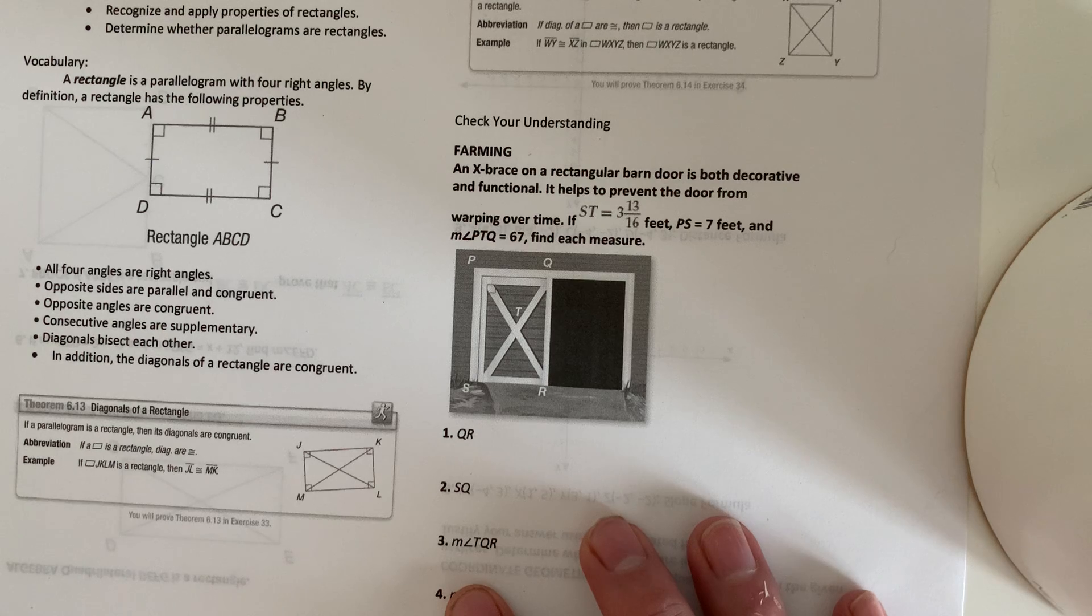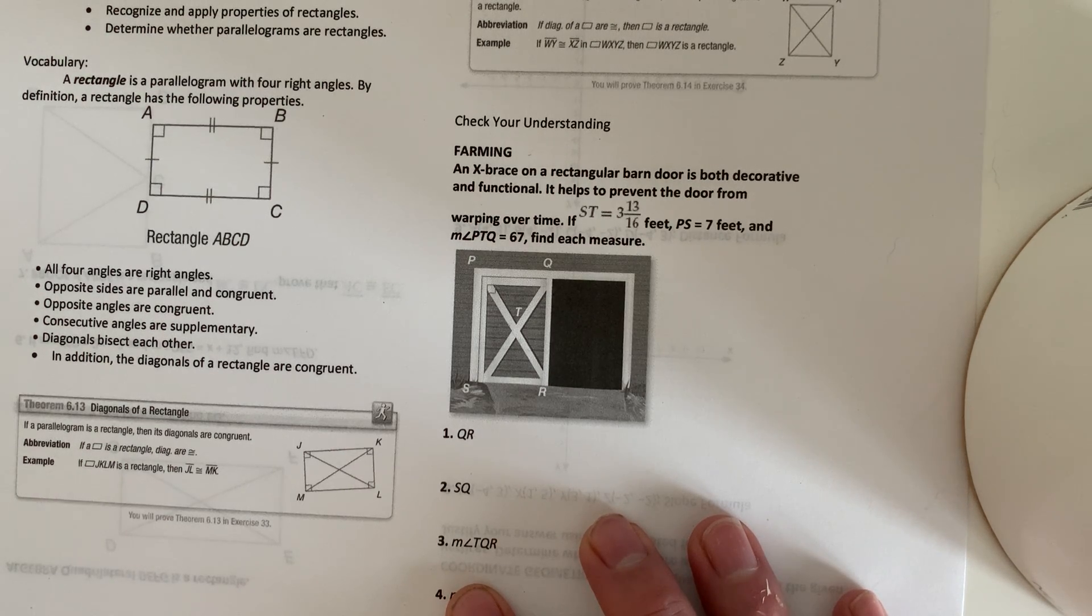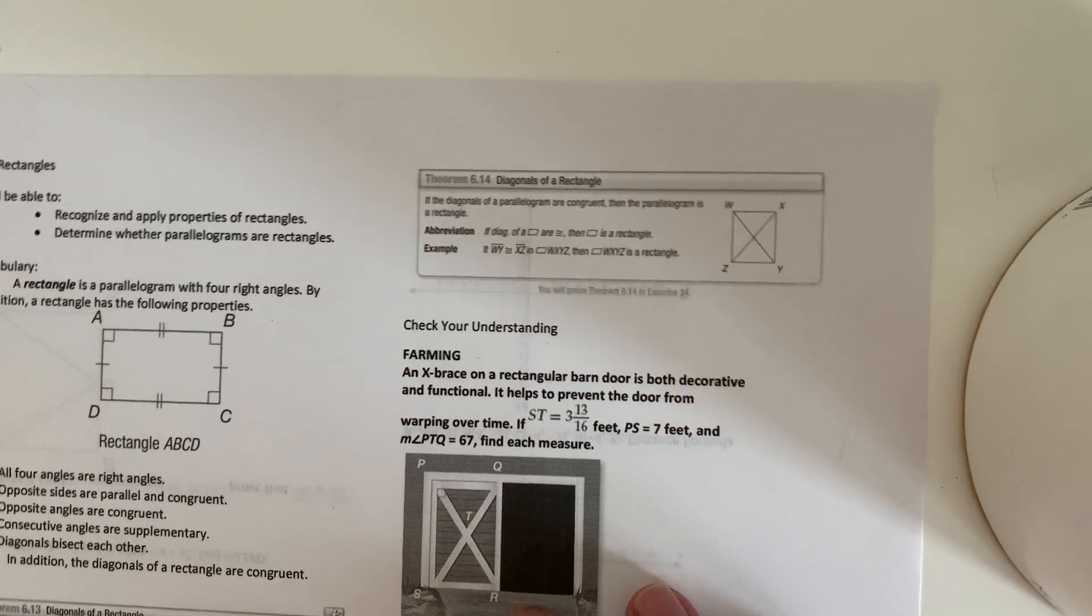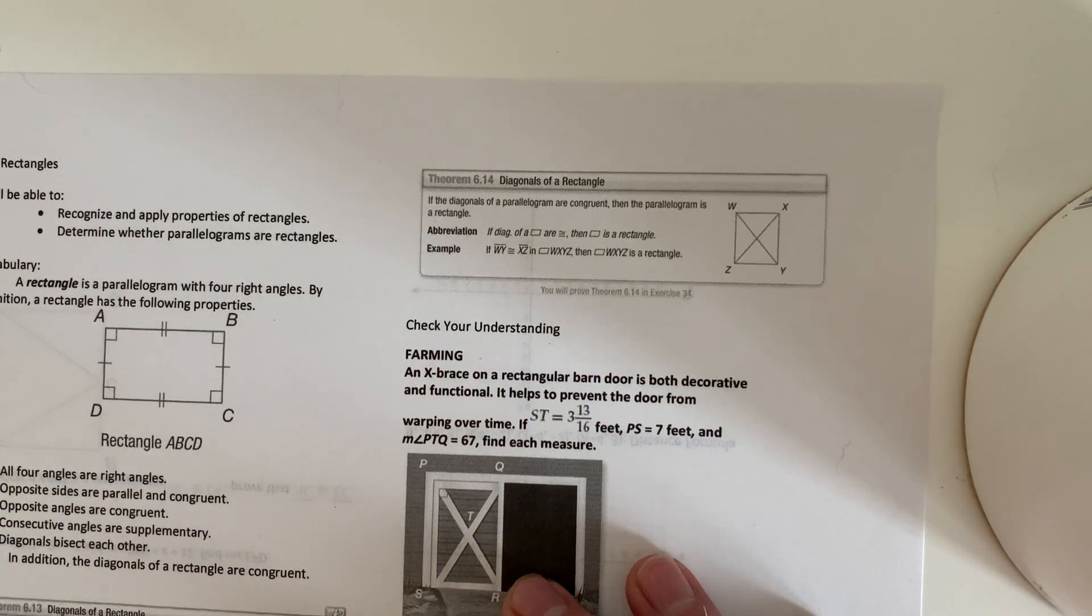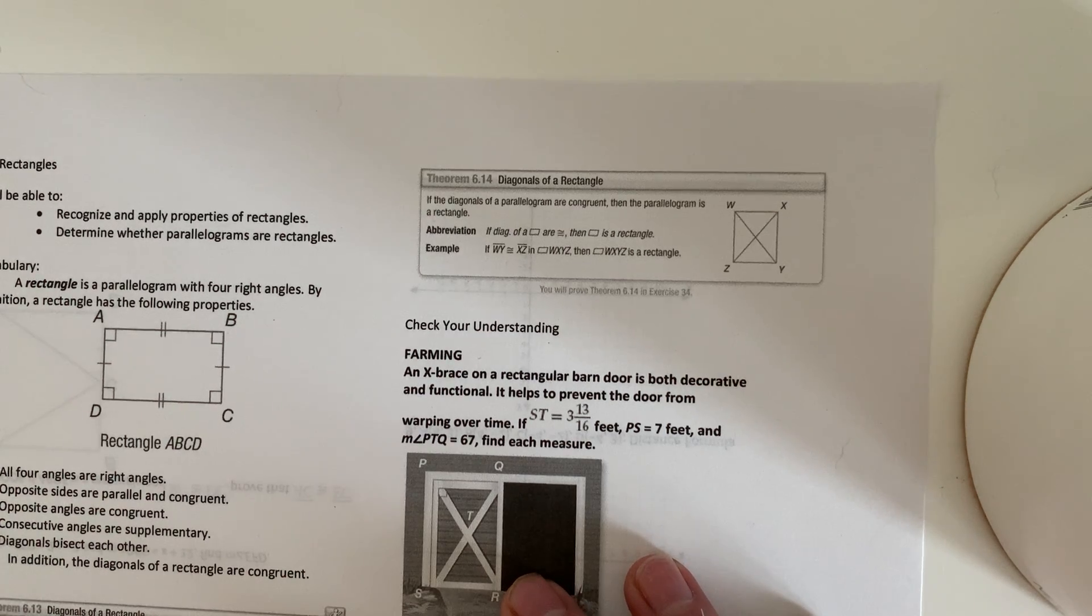So then right here we have diagonals of a rectangle. If a parallelogram is a rectangle, then its diagonals are congruent. Diagonals of rectangles as well: the diagonals of a parallelogram are congruent, then the parallelogram is a rectangle. So it goes both ways.